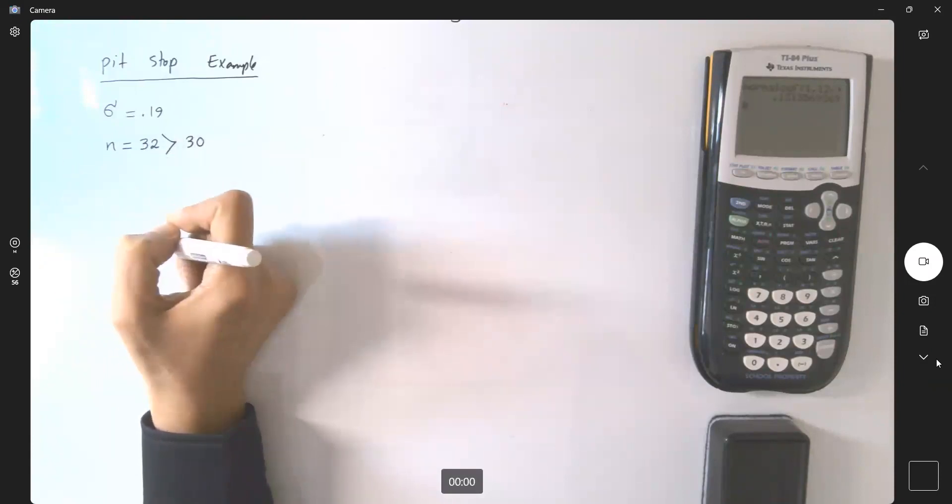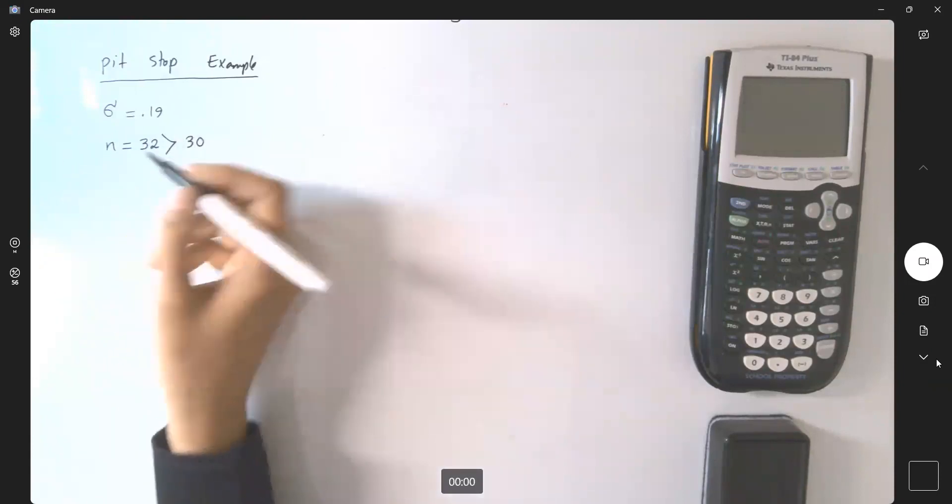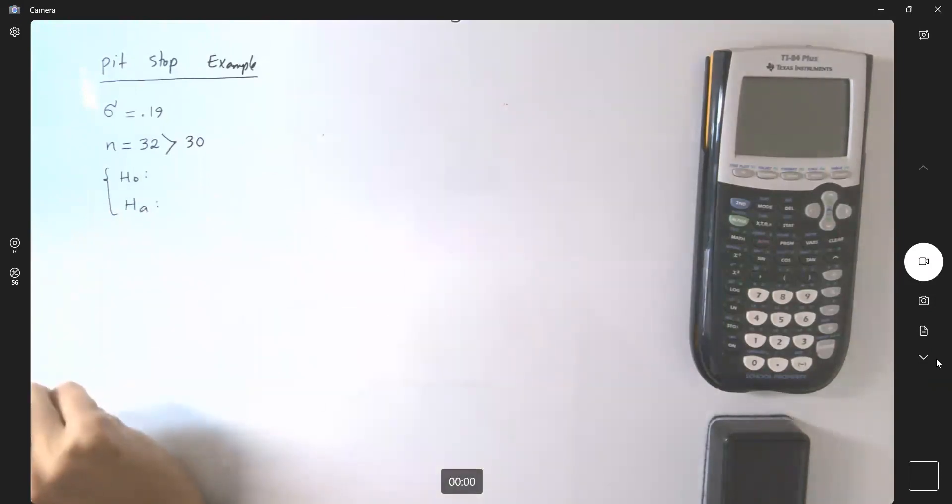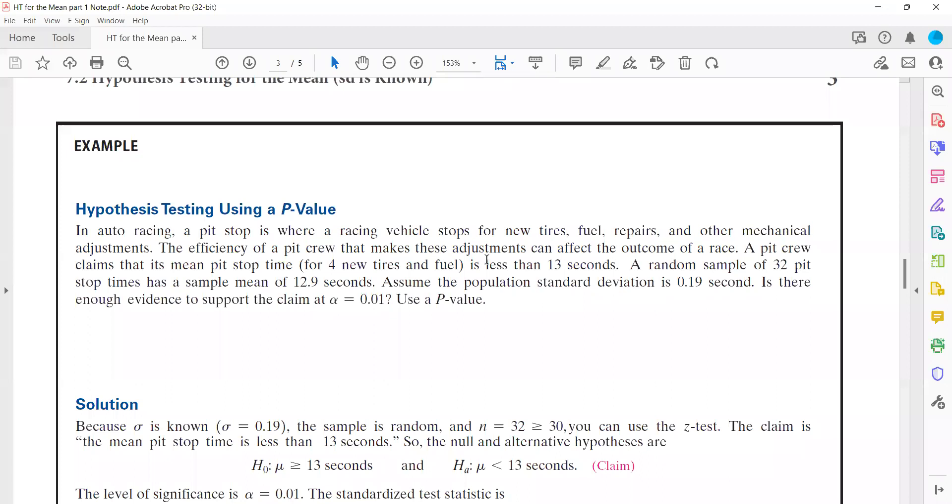In the next step, we're going to identify the null and alternative hypothesis. So since we have a keyword, go back to the notes. Since we have a keyword which says less than, it means that your alternative hypothesis is given, and that is your claim.